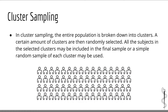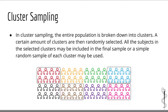The next type of probability sample is the cluster sample. In cluster sampling, the entire population is broken down into many clusters. A random sample of clusters is then selected, and either every member of a cluster is included in the study, or a simple random sample is obtained from the selected clusters. This type of sampling is performed when the population is spread out geographically. For example, to obtain a sample of New York City, you could make a list of all zip codes, pick a random sample of zip codes, and then enroll all subjects from those randomly selected zip codes.